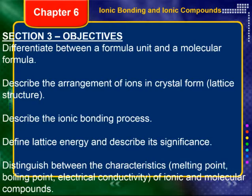If the bond involved in a particular compound is ionic, we call it a formula unit. If the bond involved in a particular compound is covalent, we call that a molecular formula. So you got that one off the table already.